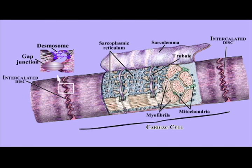As seen on this workbook illustration, the intercalated discs house two types of junctions: gap junctions and desmosomes. Gap junctions function in exchange of small substances, especially the electrolytes involved in the electrical conduction for the generation of the heartbeat. The desmosomes provide for strong physical intercellular connections.